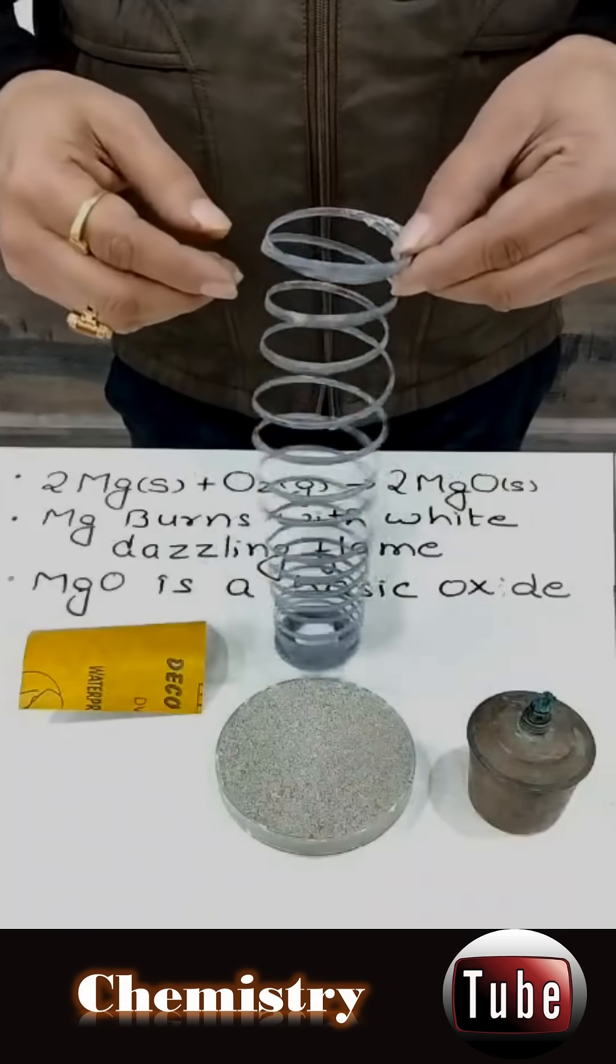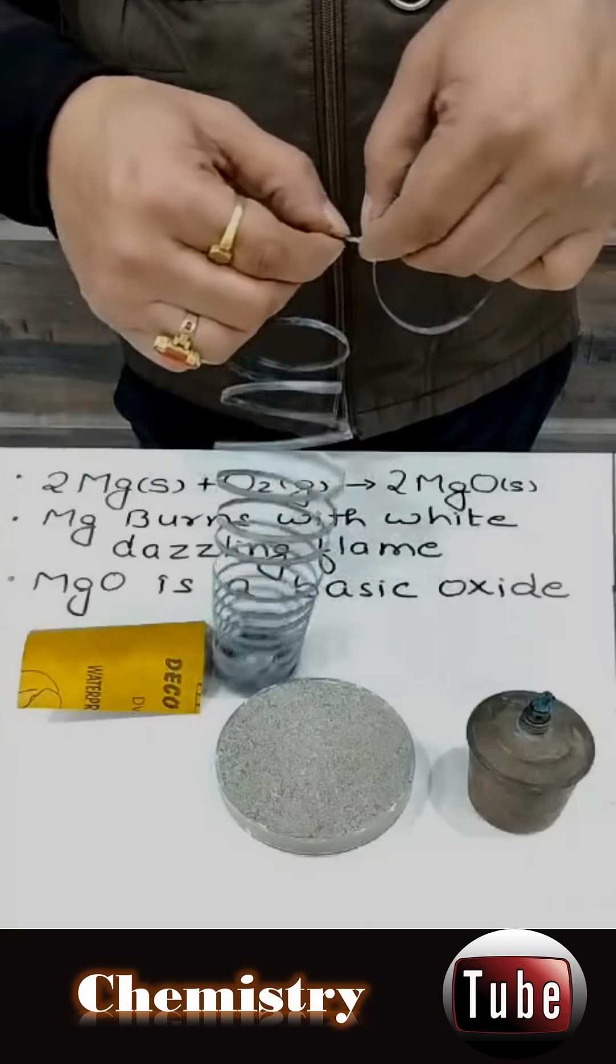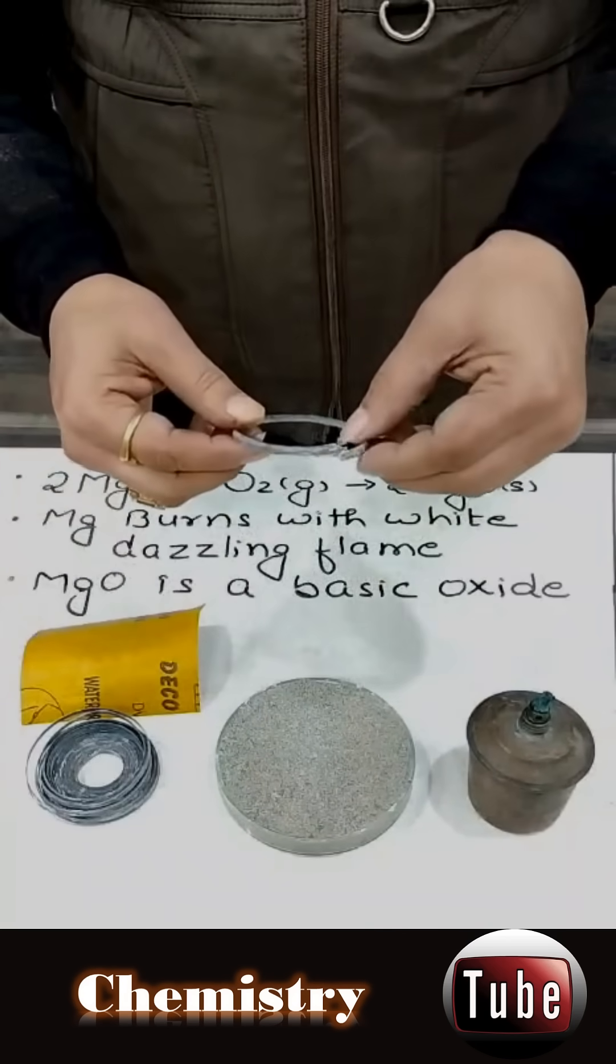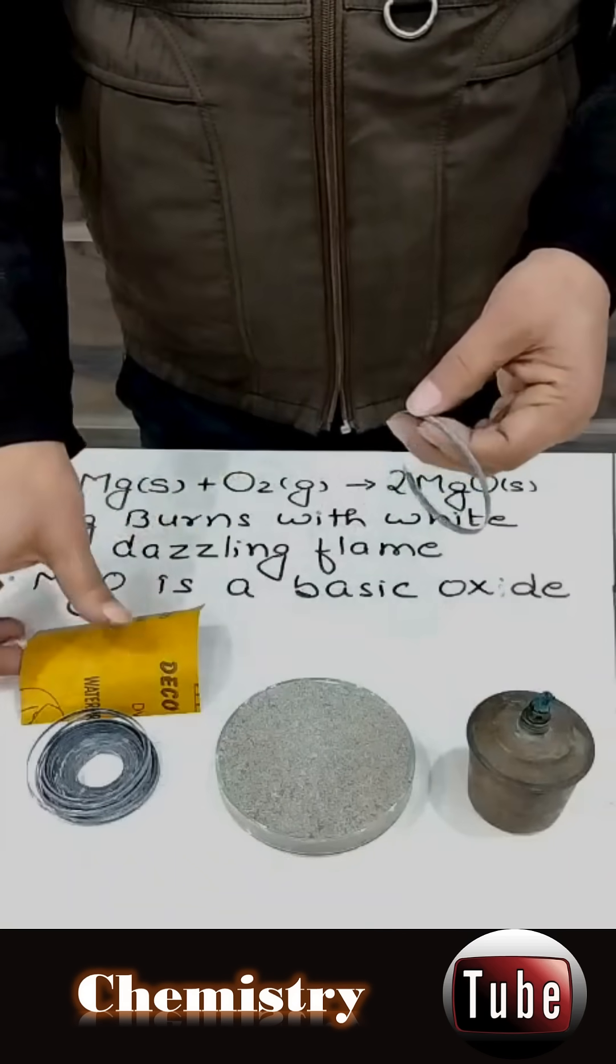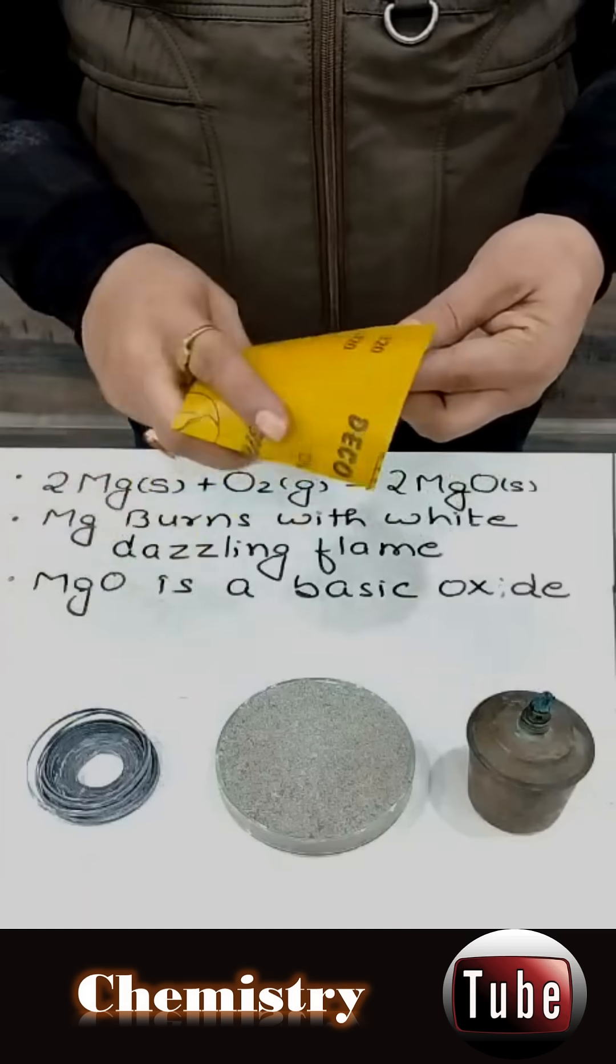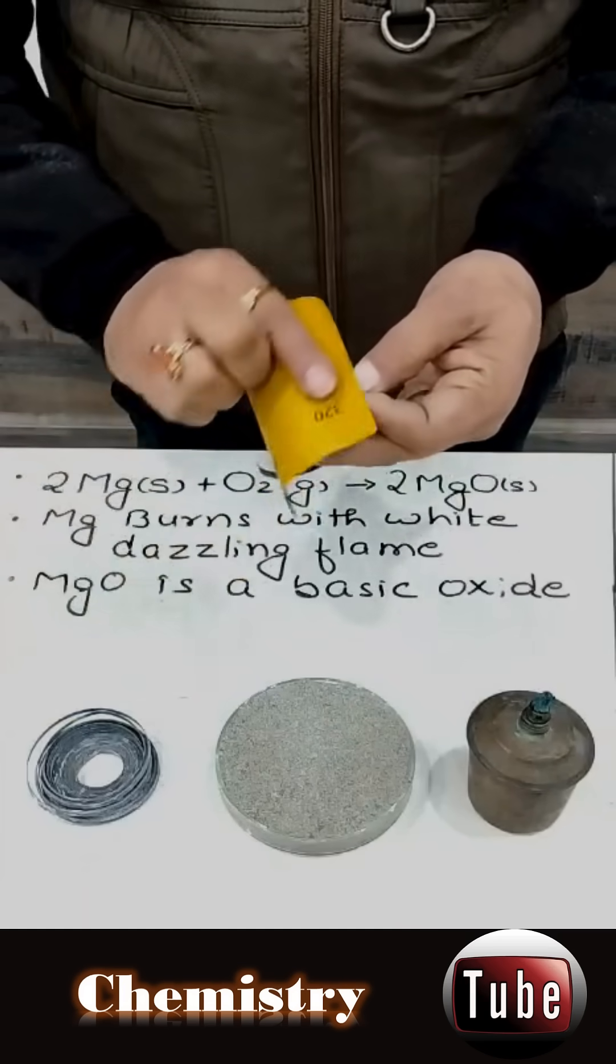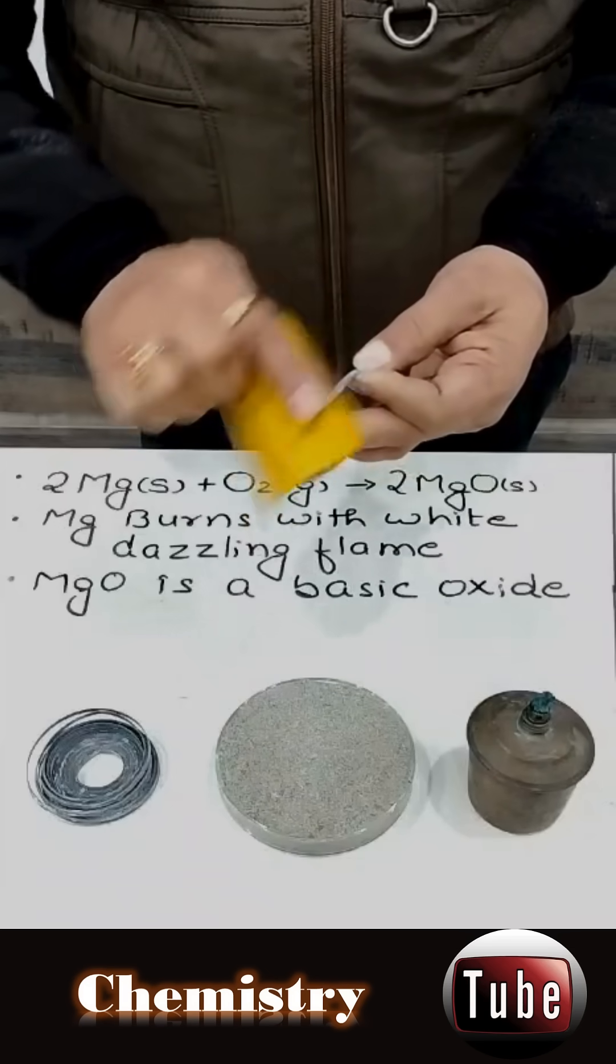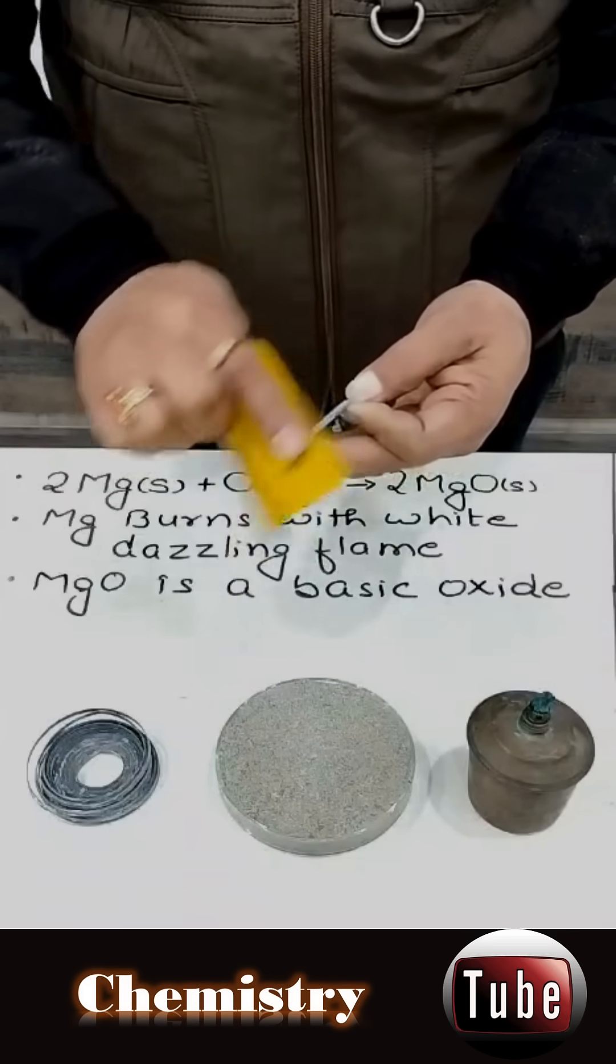First of all, what we will do, we will take a small piece of magnesium ribbon. You can cut it with the help of your hand. Now, you will take a sandpaper and you will rub this magnesium ribbon with the help of this sandpaper so that any oxide layer which is present on the surface of magnesium ribbon is removed.